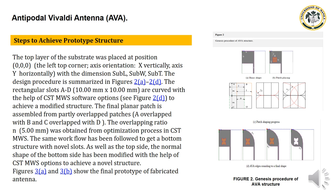The final planar patch is assembled from partly overlapping patches — overlapping with B and C, and overlapping with D. The overlapping ratio of 5 mm to 5 mm was obtained from the optimization process in CST MWS. The same workflow was followed to get the bottom structure with novel slots, modifying the normal shape of the bottom side with CST MWS to achieve a novel structure.